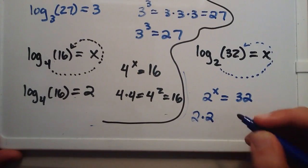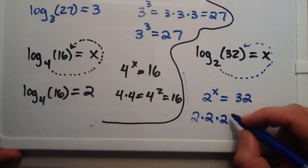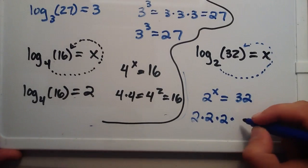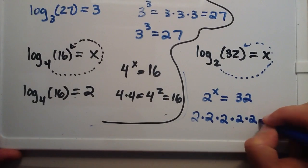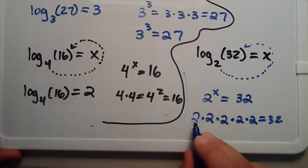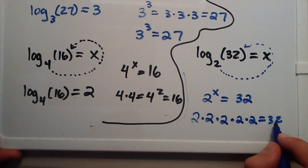Well, 2 times 2 is 4, times another 2 is 8, times another 2 is 16, times another 2 equals 32. So 2 multiplied by itself 5 times equals 32.